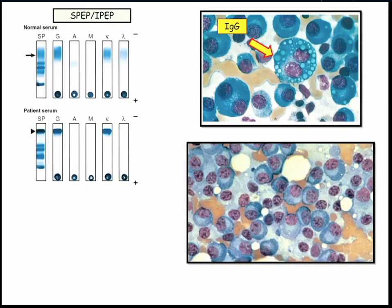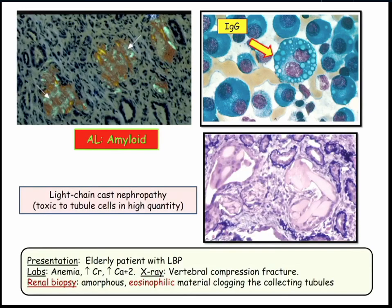In terms of cells you need to know, you need to know what plasma cells look like — chock full of immunoglobulins. Here's the renal disease. There are three renal diseases from myeloma. What I don't have here is renal disease secondary to hypercalcemia — hypercalcemia causing calcinosis of the kidney — that's one mechanism.